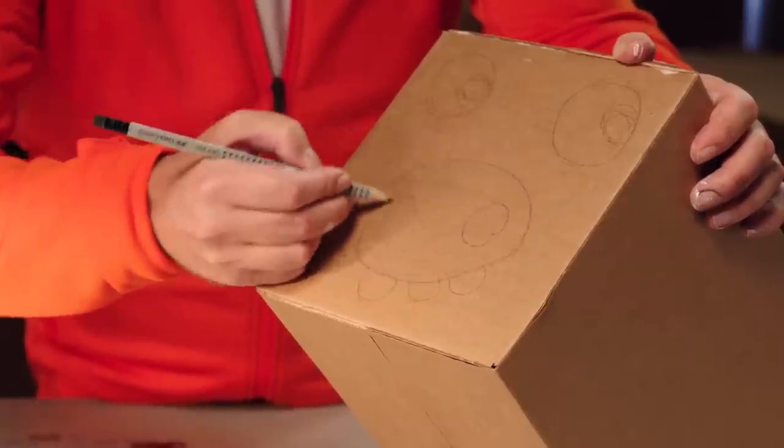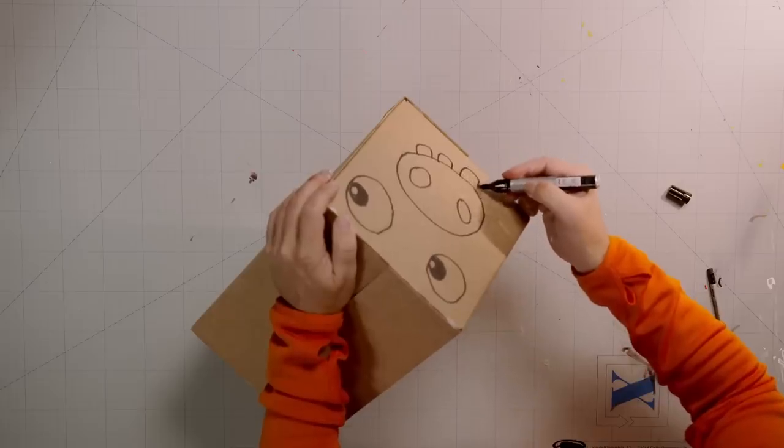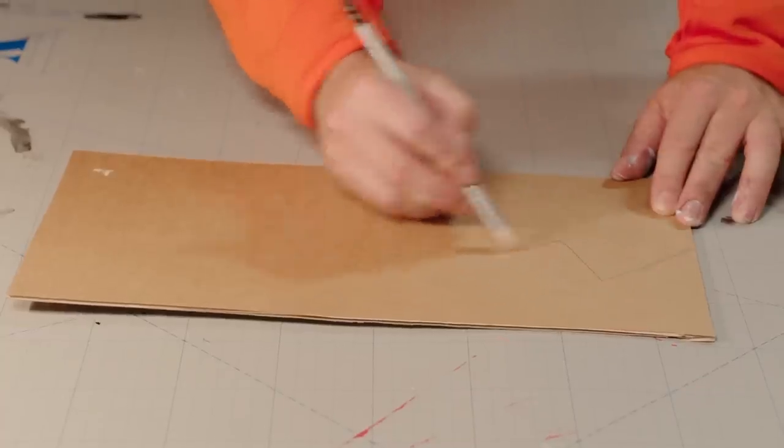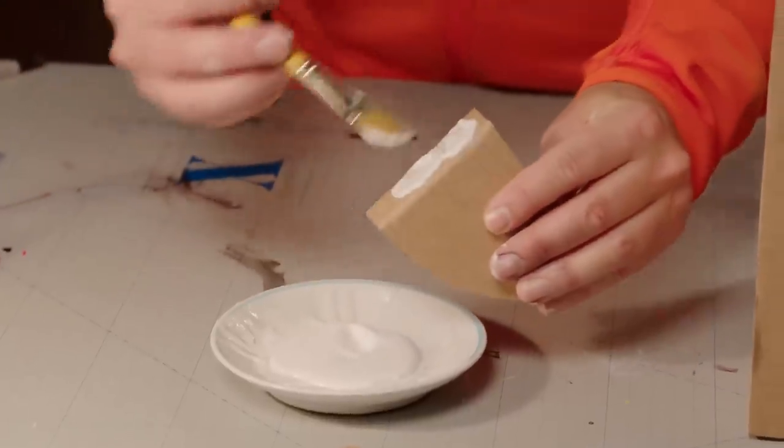First, draw the zebra on the box with pencil and marker pen. Next, draw and make all the extra zebra parts and glue them on.